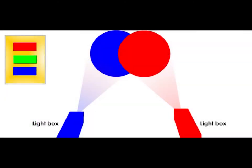Next, let's answer a few questions. What is the colour formed when red light and blue light are mixed together? The answer is magenta.